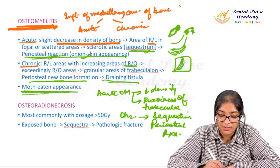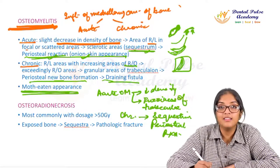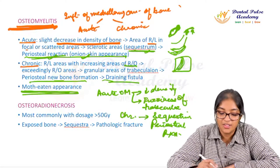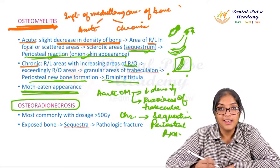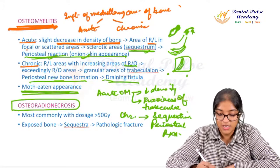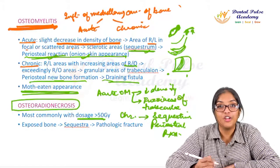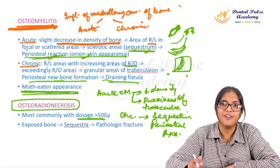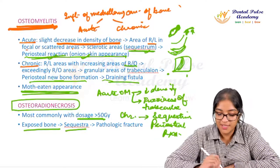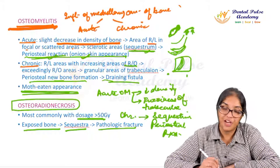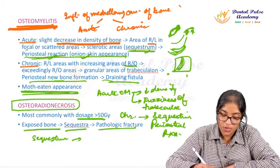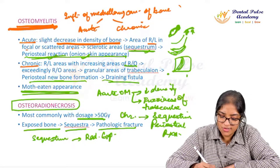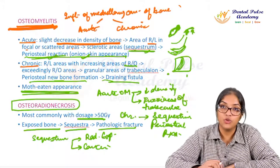Moth-eaten appearance occurs when the entire area is mottled with radiolucencies and areas of radiopacity. Osteoradionecrosis is an inflammatory lesion seen when bone infection occurs in a patient with prior radiation exposure exceeding approximately 65 Gy, combined with trauma or extraction, leading to exposed bone, sequestra formation, and tendency for pathological fractures. Sequestrum formation in a patient with radiation history points toward osteoradionecrosis.